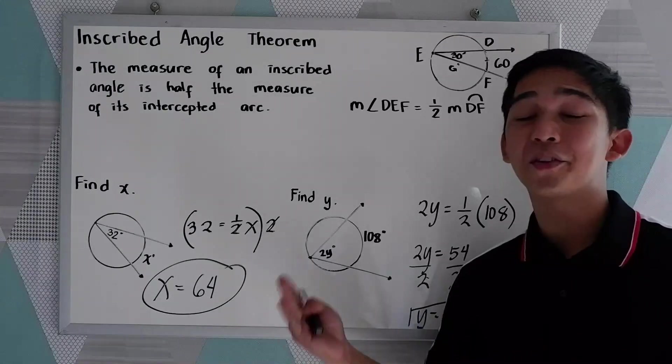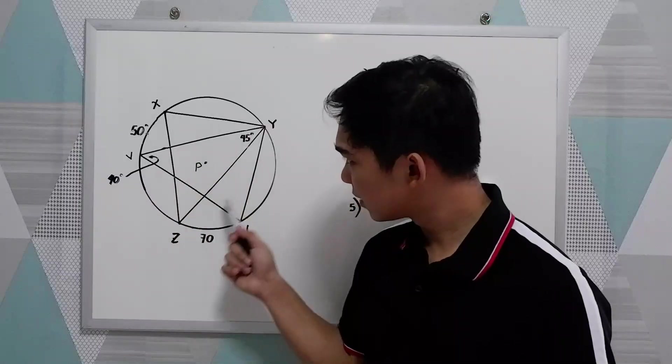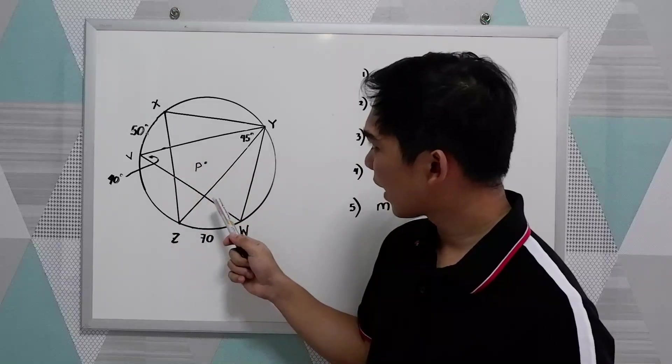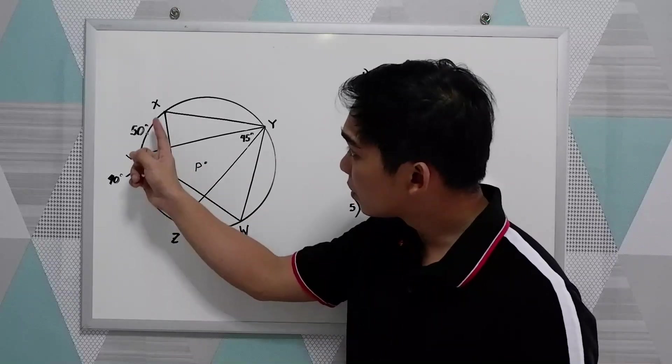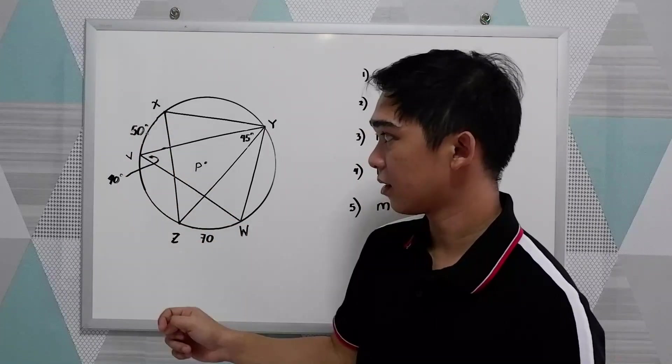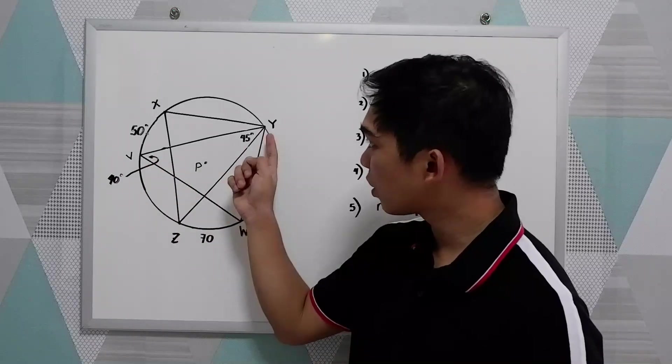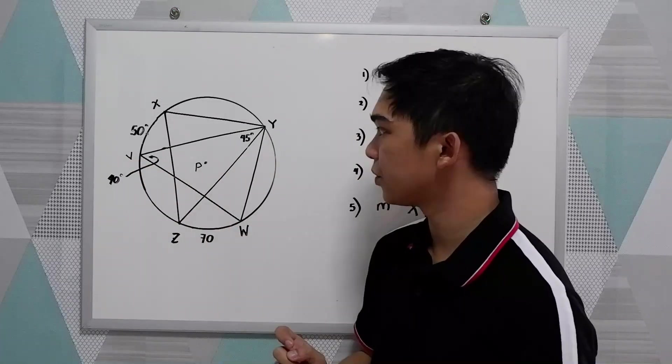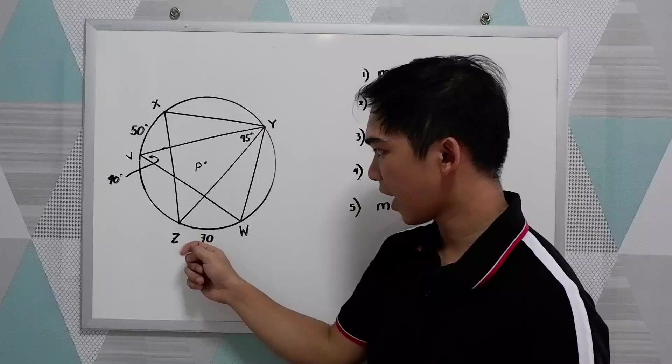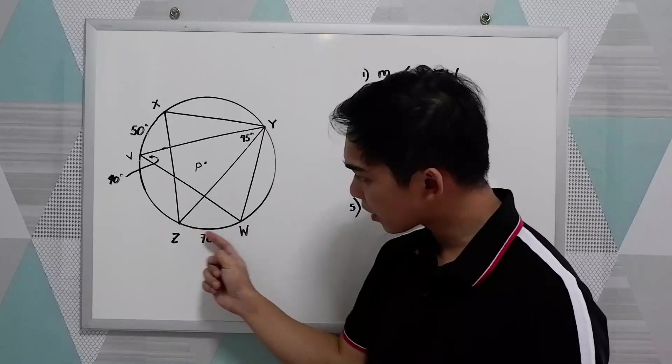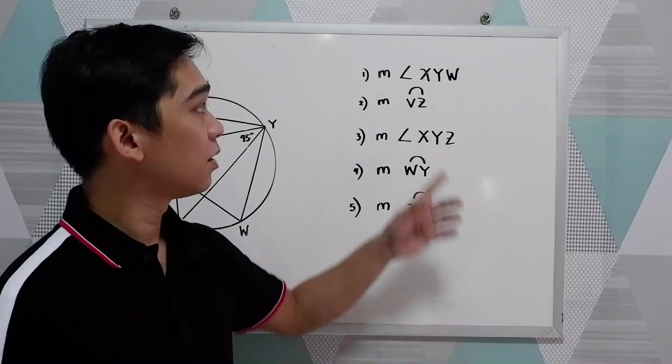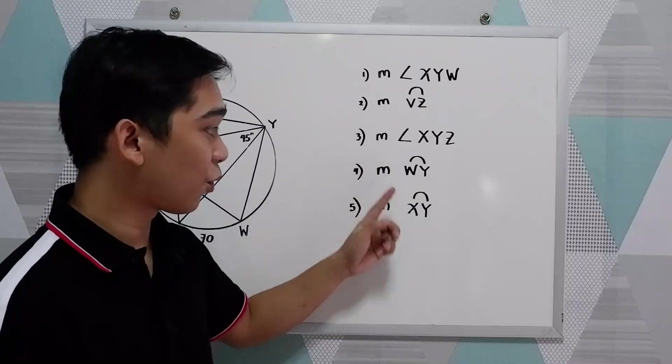Let's have another example. And now, let's have this circle P and the following given. We have intercepted arcs and inscribed angles. We have the given 50 here as the intercepted arc X-V. And 40, the measure of angle Y-V-W. And 45, the measure of V-Y-Z. And intercepted arc, which is 70. We're going to find the following angles and arcs. Number 1, 2, 3, 4, and 5.